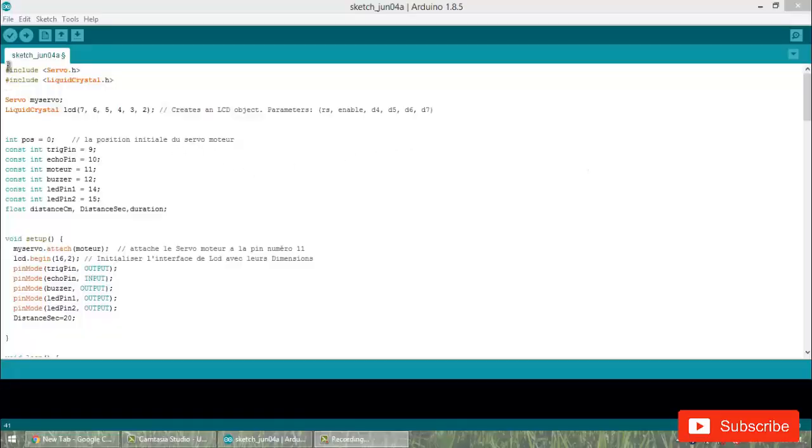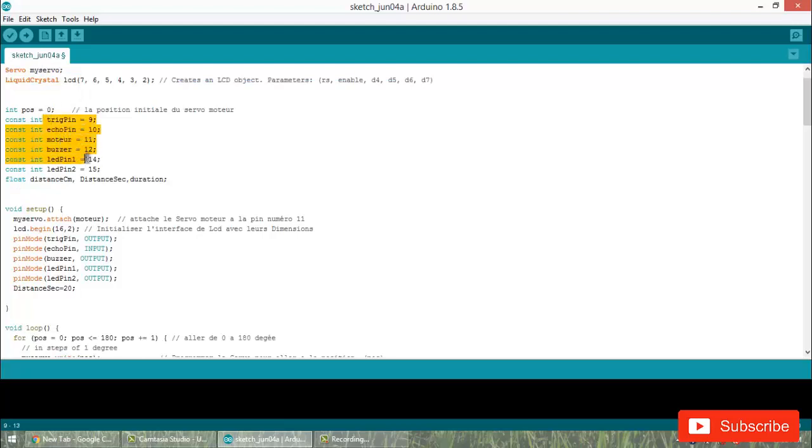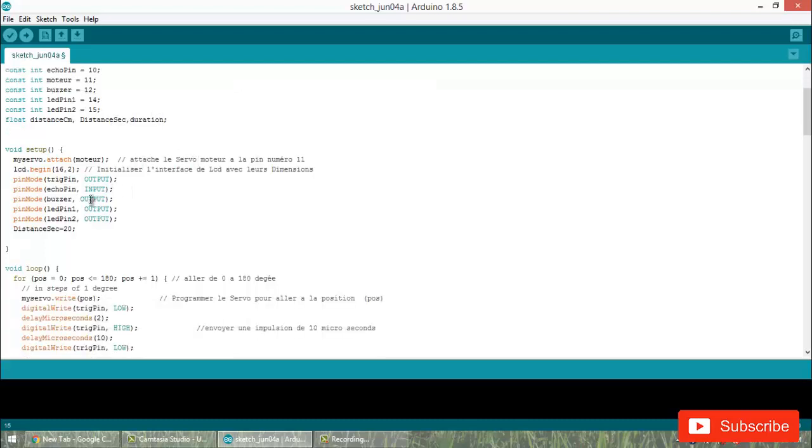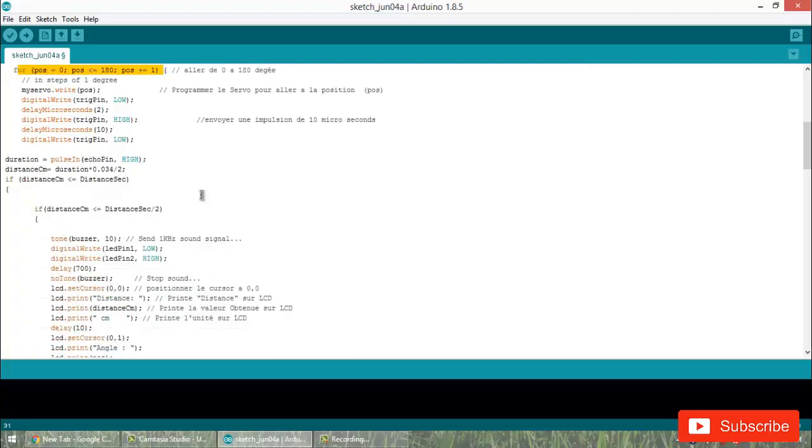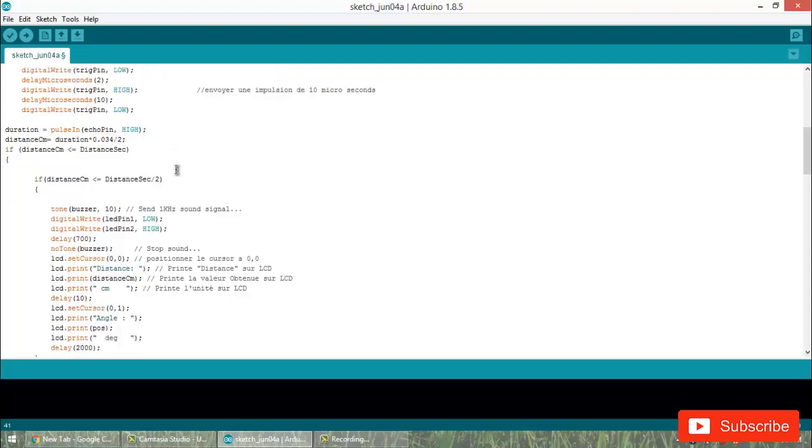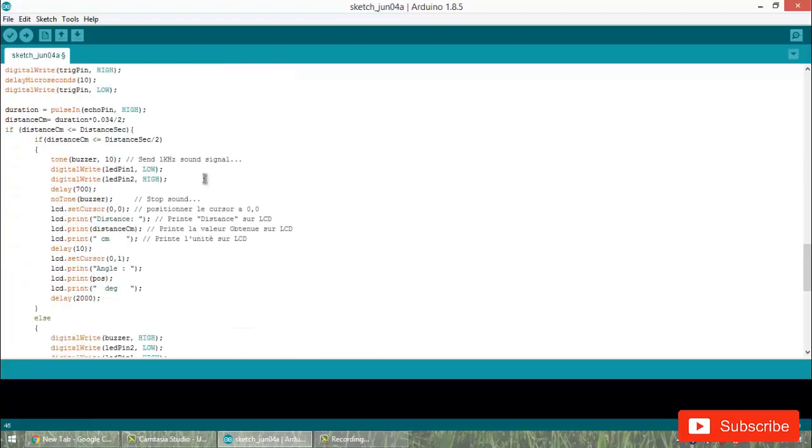Now let's come to the programming section. The programming is very easy. This is for interfacing the liquid crystal LCD, and this program is for digital input and output. We have compared the distance and angle. This formula is used for calculating the distance on the basis of velocity. You are seeing 0.034. This is the velocity of ultrasonic wave in air at 340 meter per second. The program is a comparison.